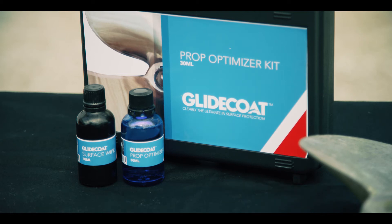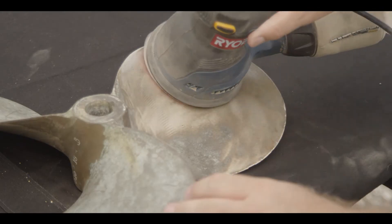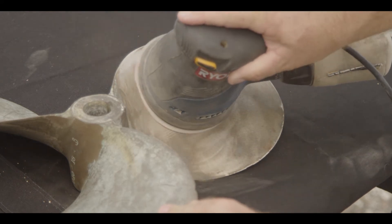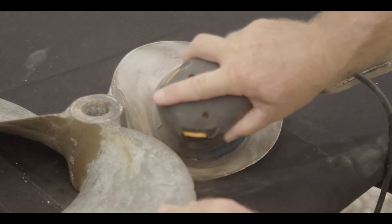To begin your GlideCoat PropOptimizer application, first remove dust, oxidation, and marine growth by applying 150 grit sandpaper to the surface areas to be coated.